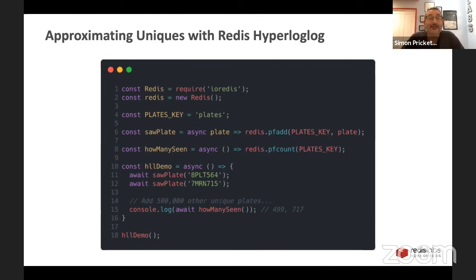And the same as the set, it's either going to store it and increment the count by one, or it's going to not store it and the count will stay the same as it is. And then our howManySeen function works pretty much exactly the same as calling the set.size, except for we're going to call Redis command called PFCOUNT. And that's going to say, hey, the Hyperloglog that's stored at the key plates, how many things have you seen? Then from line 10 down, we pretty much have the same code. We are adding license plates there. Then I can add 500,000 other license plates. And then I say, how many have you seen?